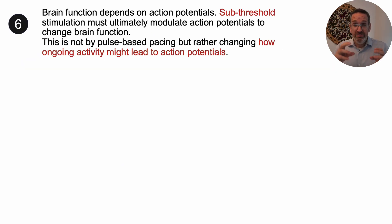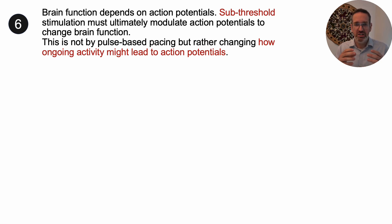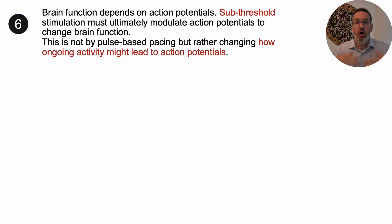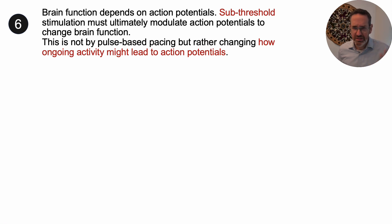Brain function does depend on action potentials, and subthreshold neuromodulation is not generating action potentials — it's modulating ongoing action potentials. It's not pacing the way superthreshold modulation is, but rather changing what's already happening.